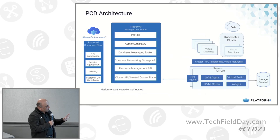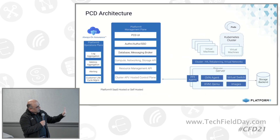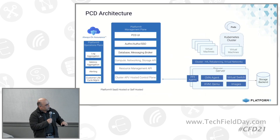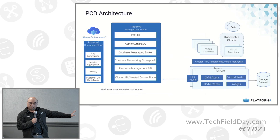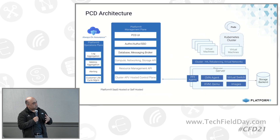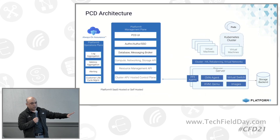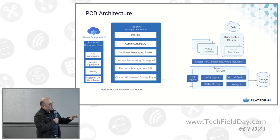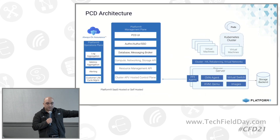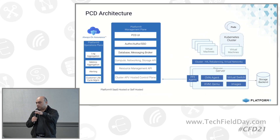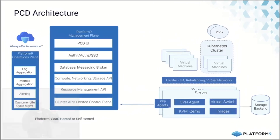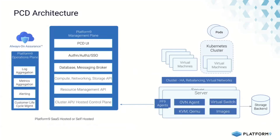There are three distinct component areas in this diagram. On the left-hand side is what we call the operations plane. The management plane is the place where all the APIs, the database, the message queue, UI components, and load balancers all live. This is what Tanay and Chris showed when they were logging in through the UI — all of that goes through the management API.